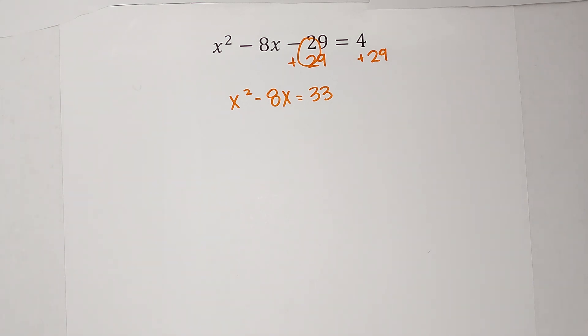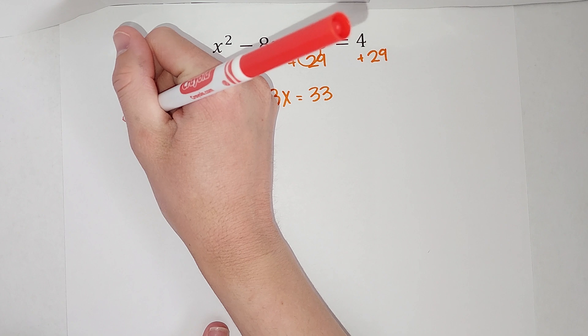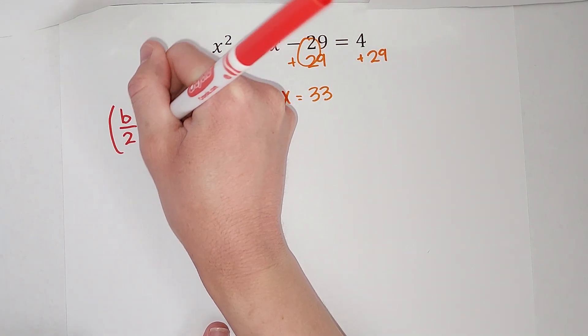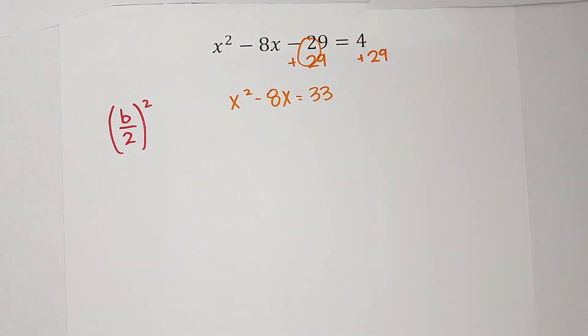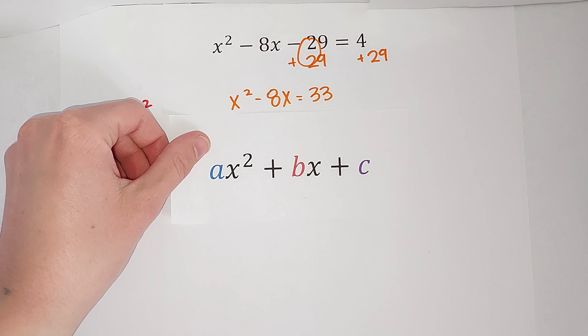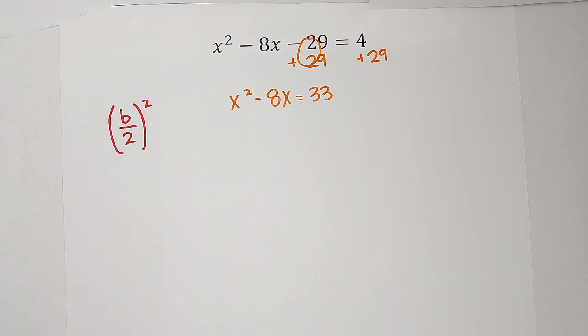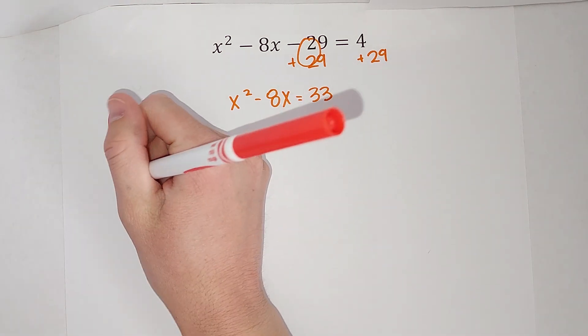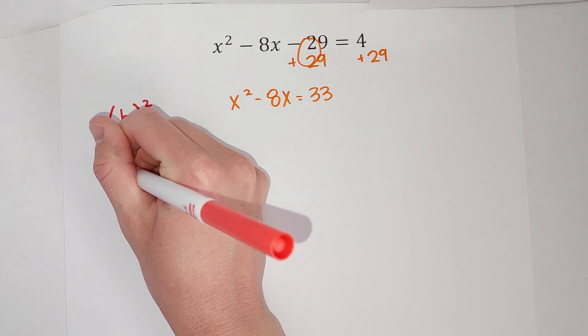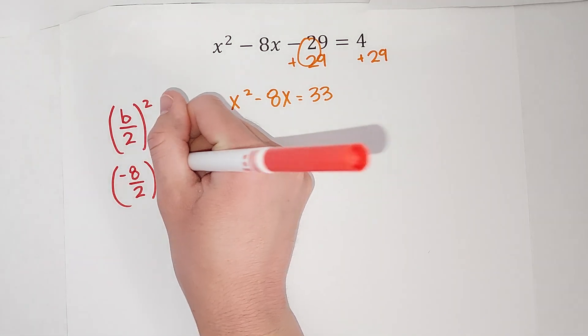To find that number, what I'm going to do is take b divided by 2 and square that. Now you're like, internet math lady, I do not see a b anywhere. What we are referring to with b when we're talking quadratics is the number in front of my x. In this case, the number in front of my x is negative 8. So I'm going to have negative 8 divided by 2, squared.